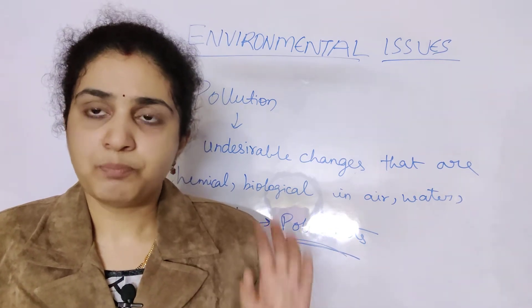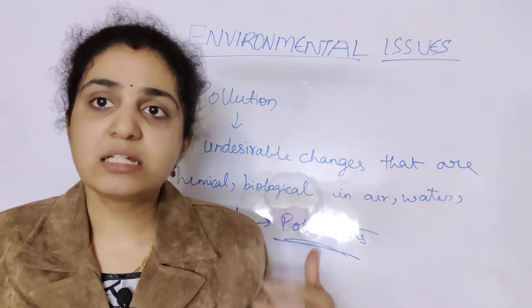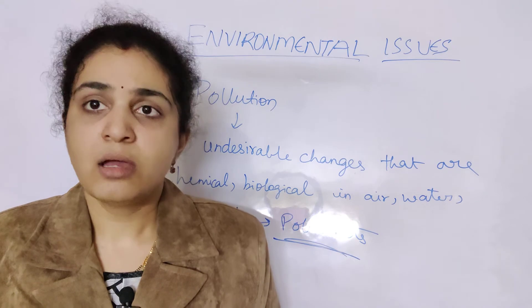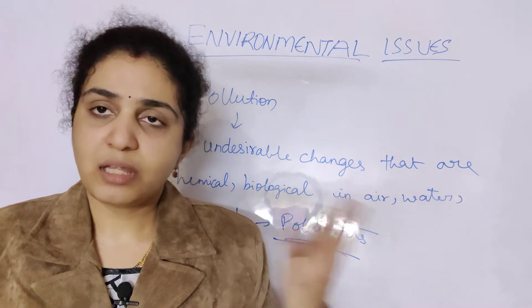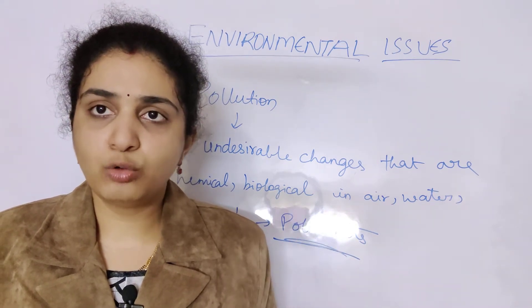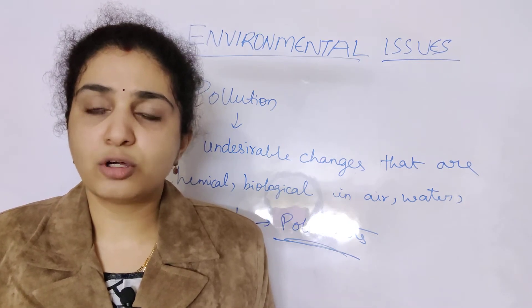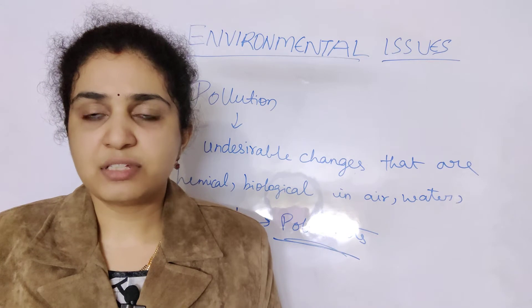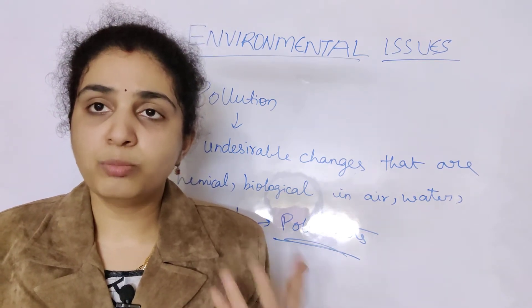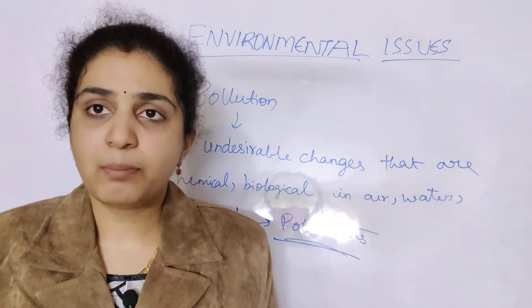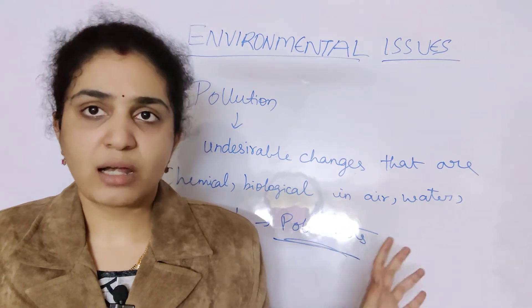Under ex situ protection, examples include zoological parks, botanical gardens, and cryo-preservation techniques for gametes. Under in situ protection there are four types: sacred groves, Aravalli hills of Rajasthan, Meghalaya forests, wildlife sanctuaries, and biosphere reserves.